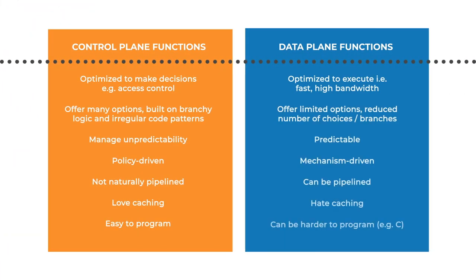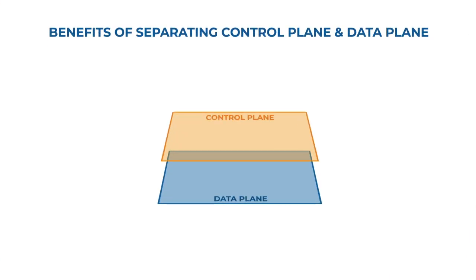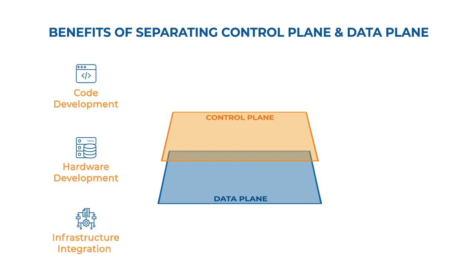As you've seen with the different examples, some functions are best abstracted into the control plane and others into the data plane. Here are the attributes to think about when deciding how to best separate the two dimensions. As a general rule of thumb, the amount of work a control plane does is usually significantly smaller than the work done on the data plane. This separation is both logical and real — code development, hardware development, and infrastructure integration can all benefit from separating control plane and data plane functions.